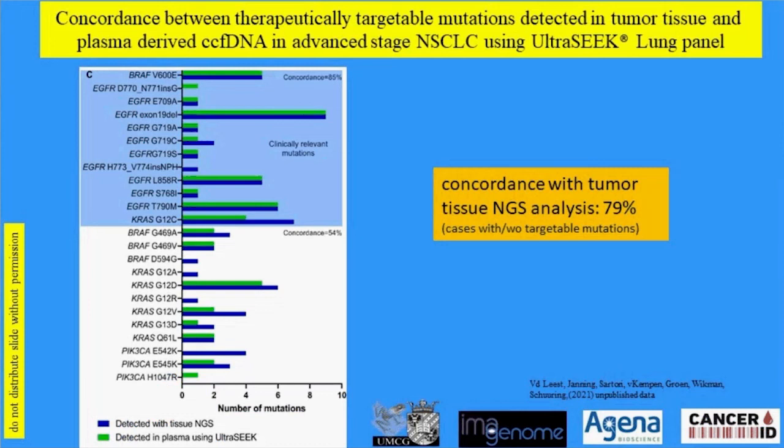We had 11 cases where we could not find a variant mutation at baseline with UltraSeq while the tumor tissue carried a mutation. We repeated testing of these UltraSeq-negative cases with the highly sensitive digital droplet assay and could find a mutation in only 2 of the 11 cases. In 9 of 11 cases, the UltraSeq baseline plasma samples are true negative ctDNA-negative samples, confirmed by digital droplet. The overall concordance with tissue analysis was 79%. For the most clinically relevant targetable mutations, concordance becomes 85%.